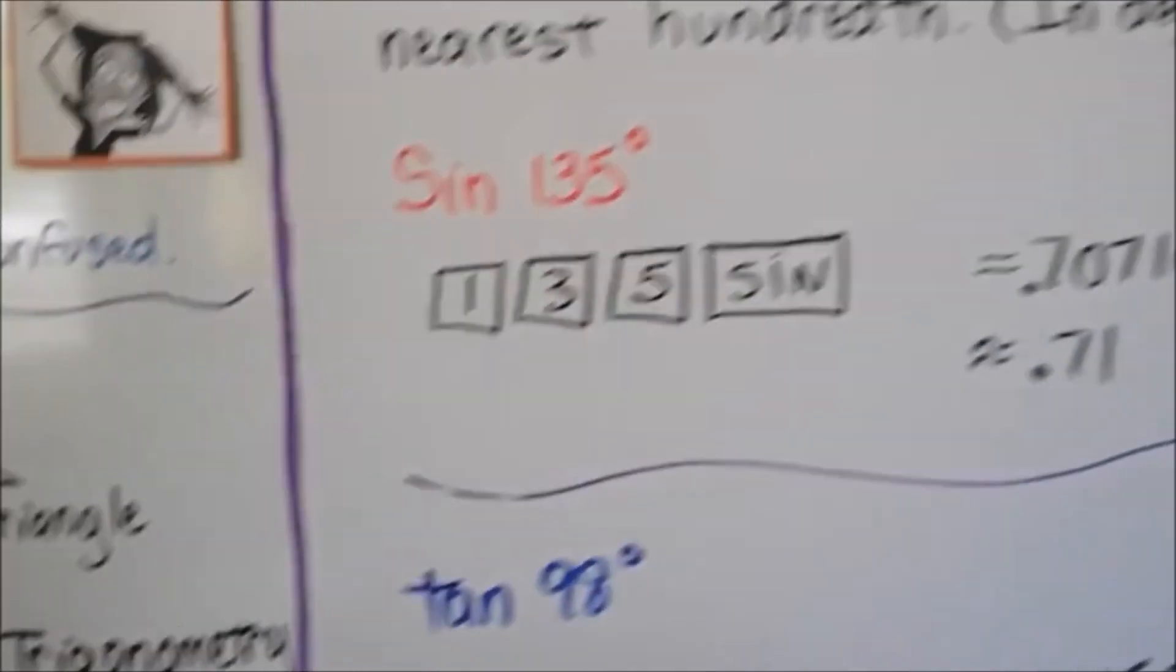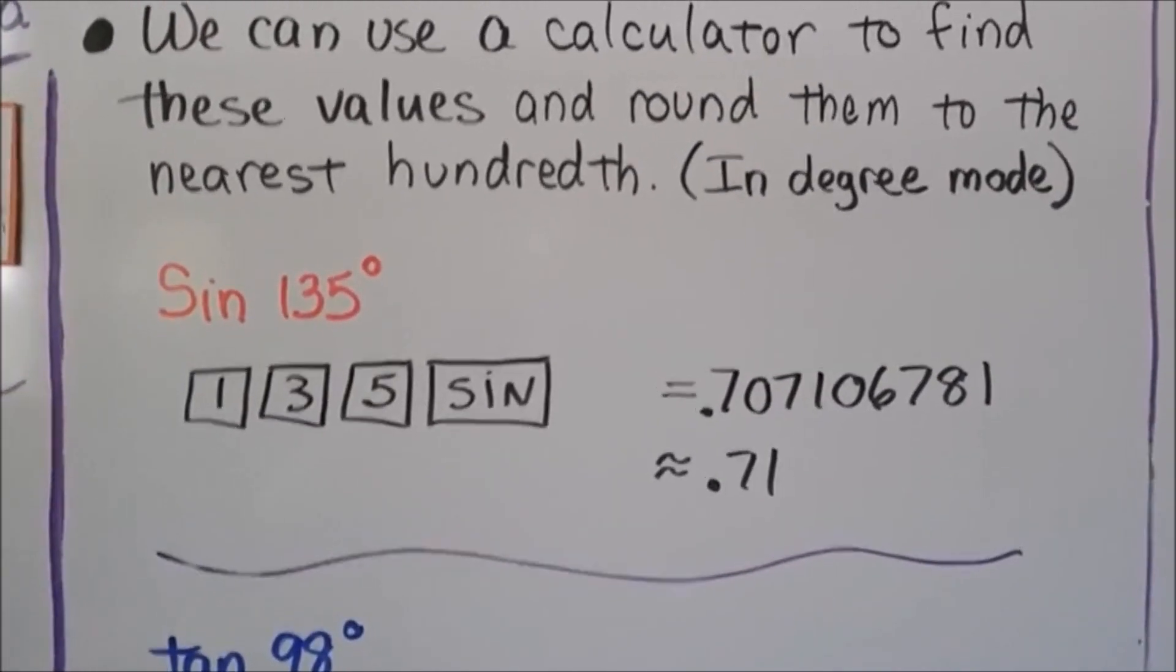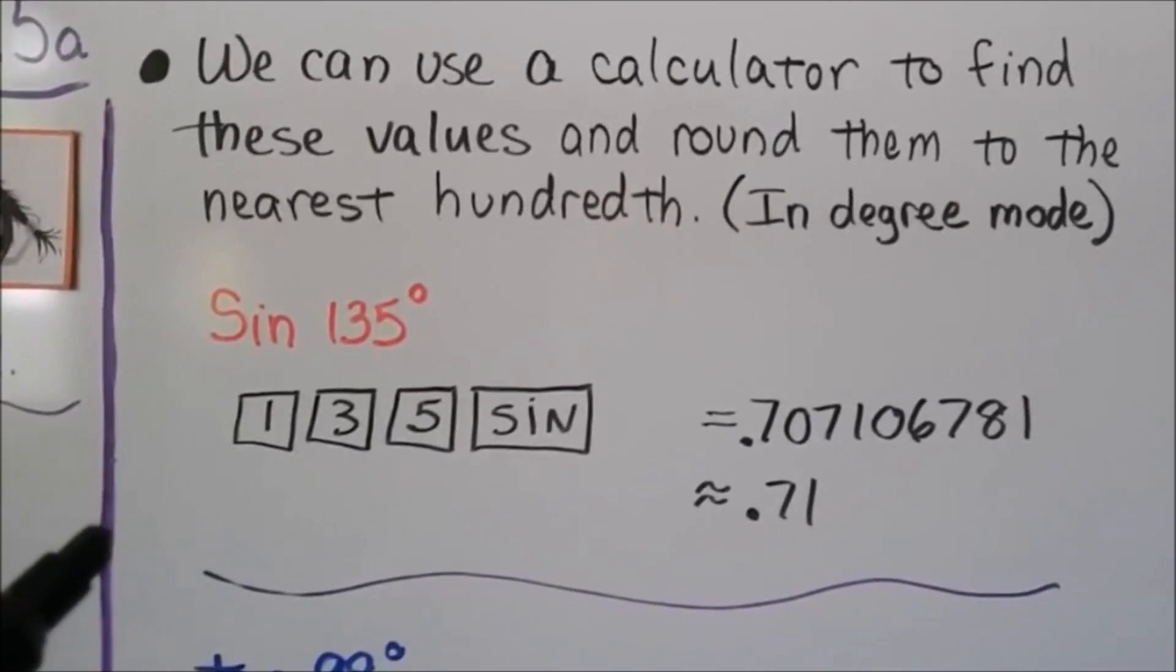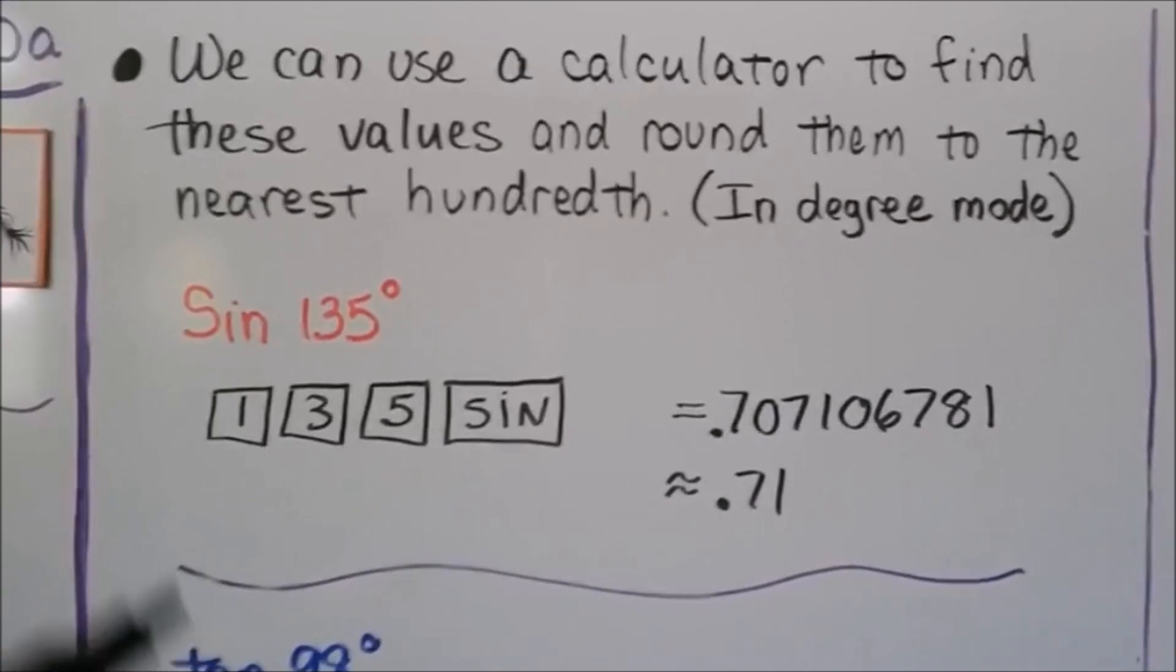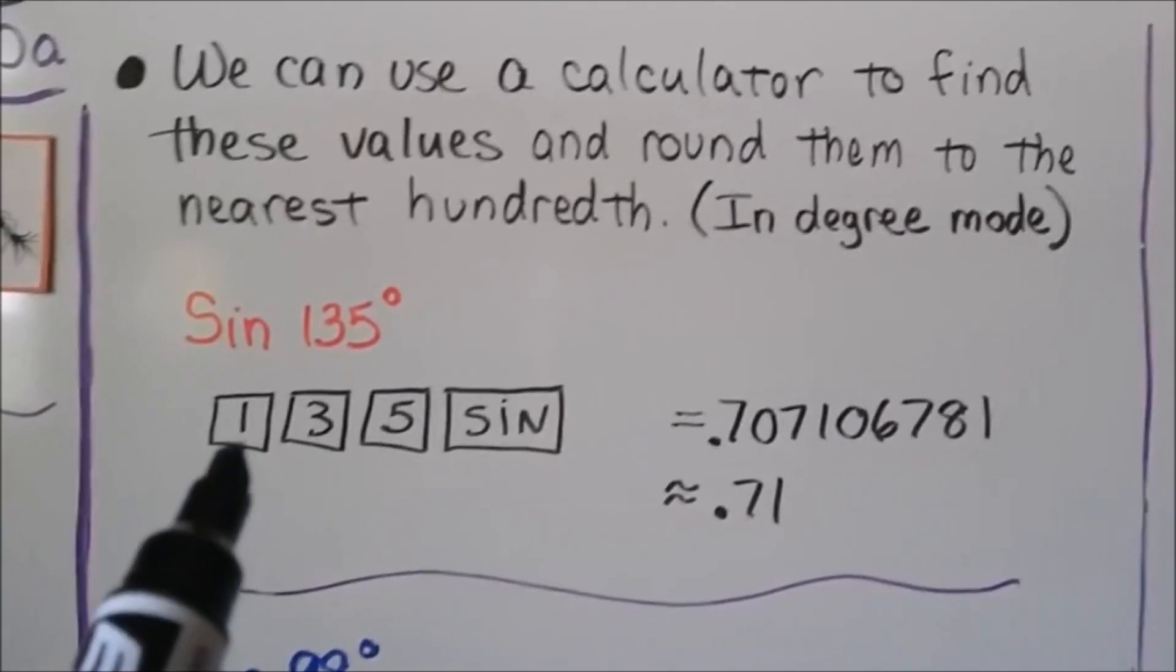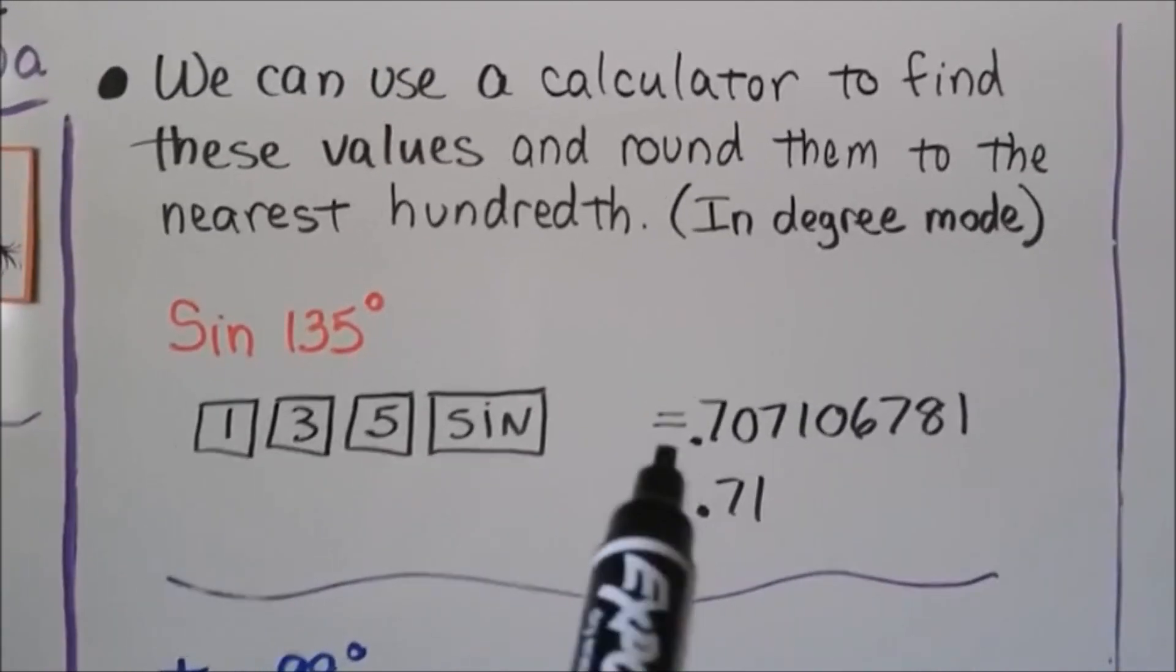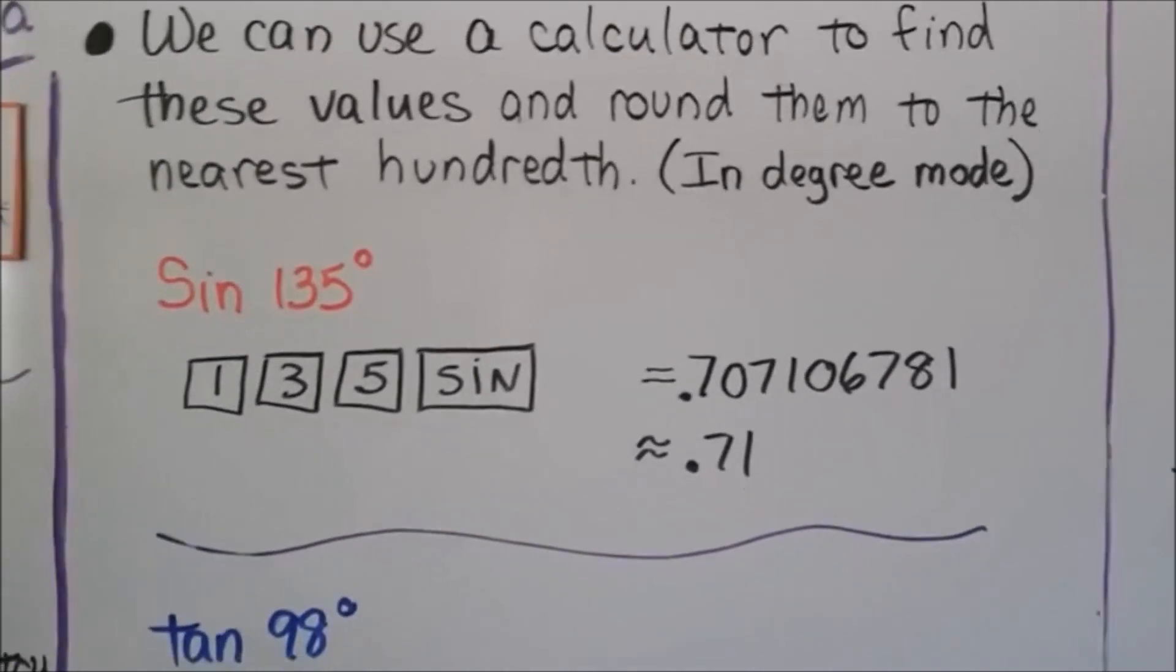So using a scientific calculator, we could find these values and round them to their nearest hundredth. And for some of you who have downloaded the RealCalc app for your phones, you can use this. So for the sine of 135 degrees, we put in 1, 3, 5 and hit the sine button. We're going to get this nice long decimal that rounds to 0.71. So it's approximately 0.71.